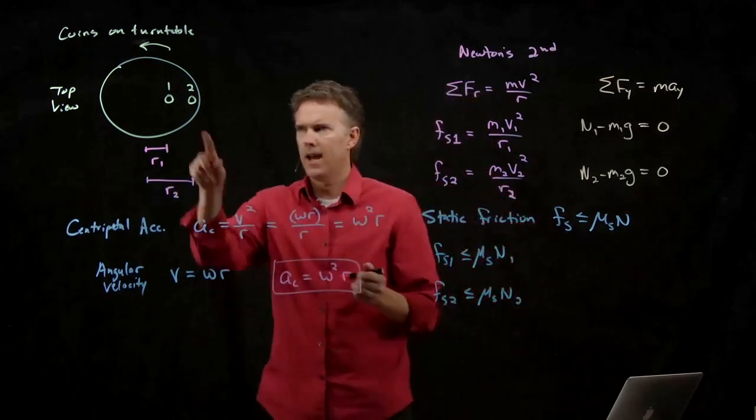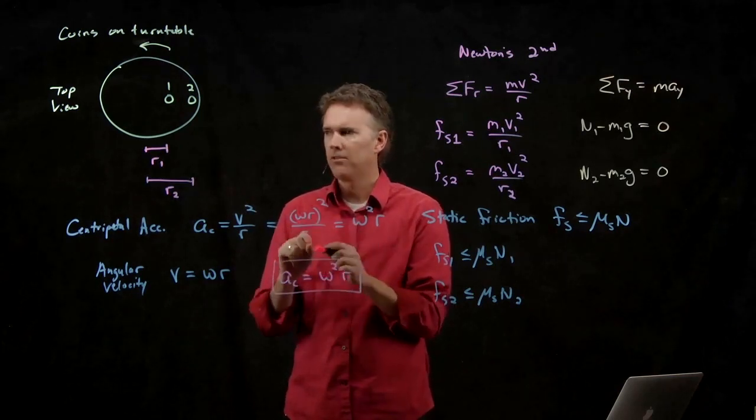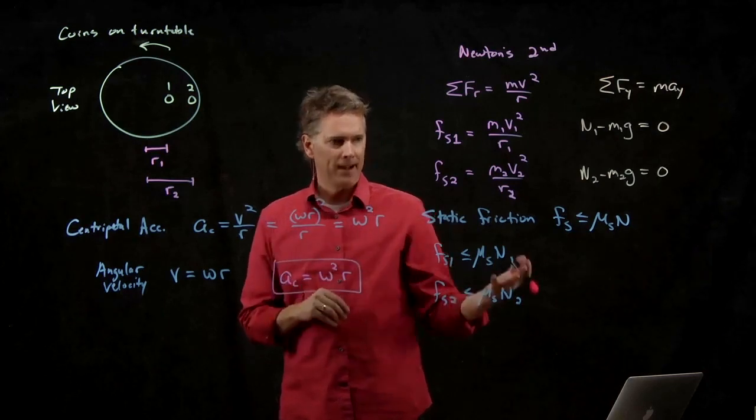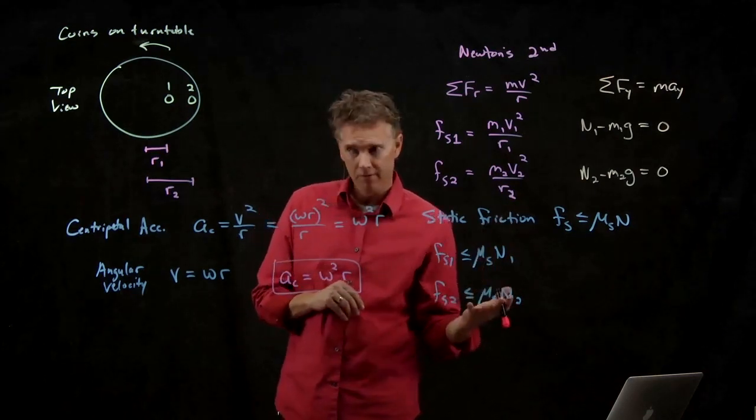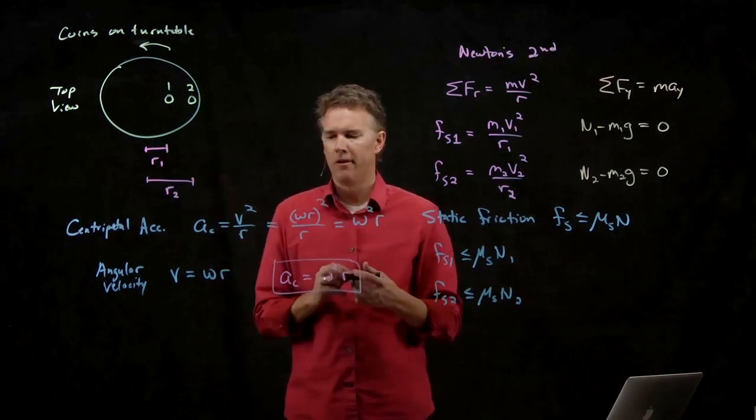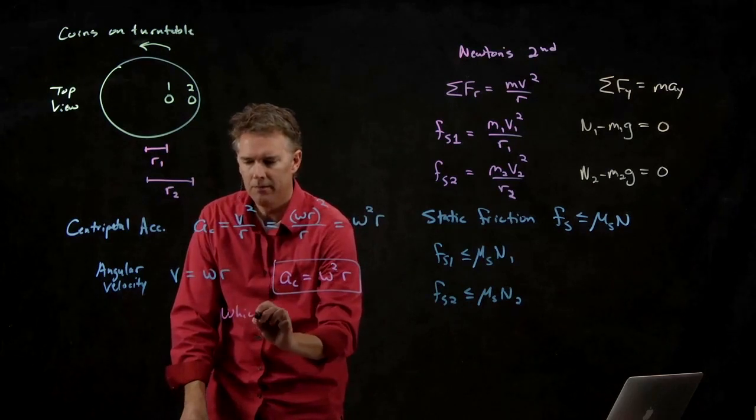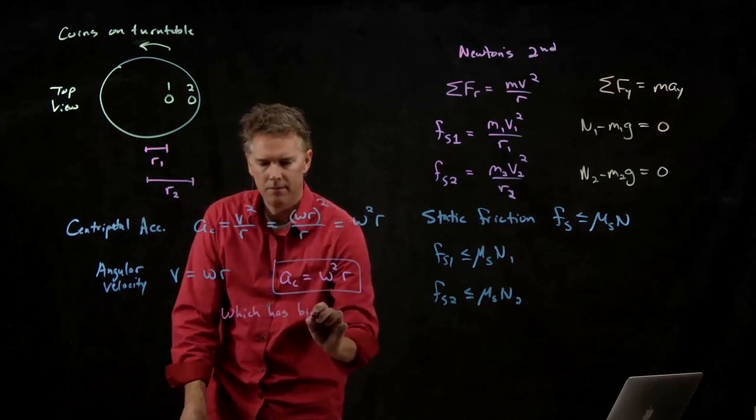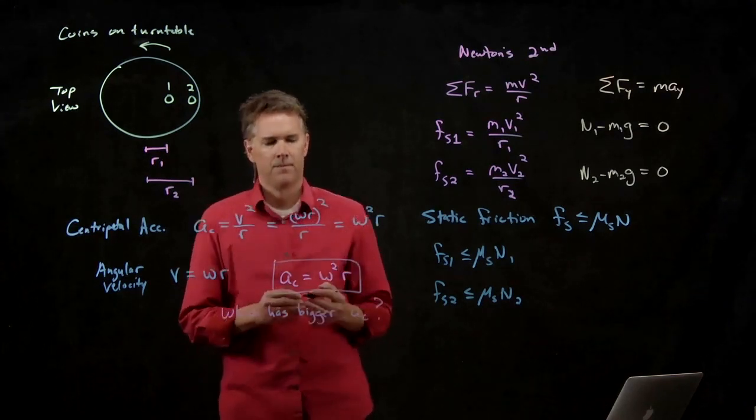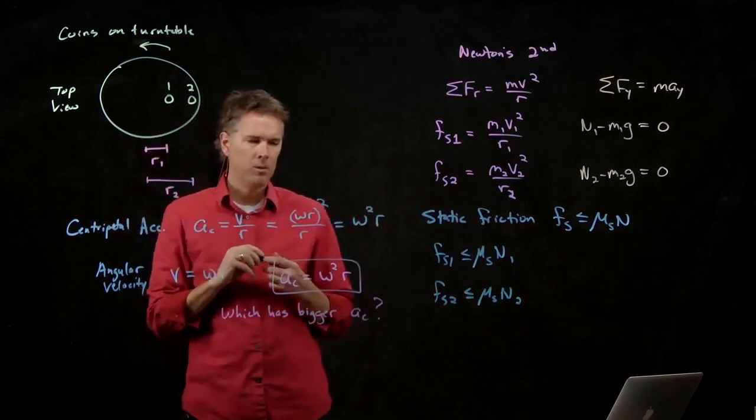Whichever one has the bigger centripetal acceleration, that's the one that's going to fly off first. Because it's going to hit its maximum of static friction first. And it's going to lose out, and that coin is going to fly off first. So which one has bigger centripetal acceleration? Well, we know the answer. It must be 2. But how do we see that?